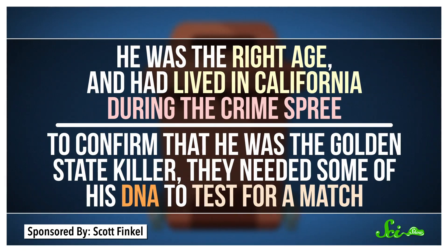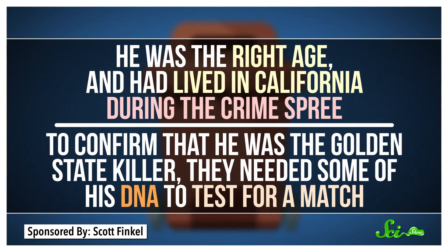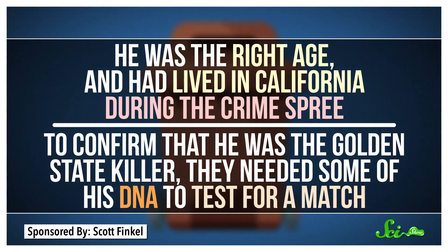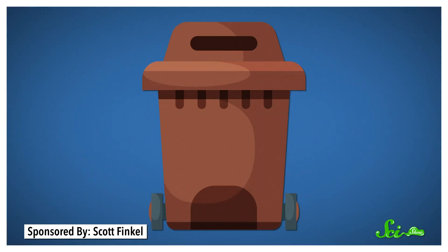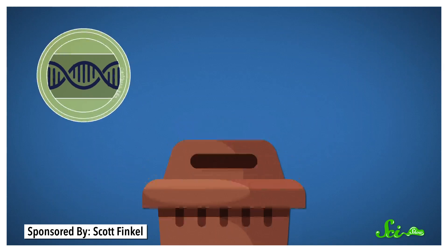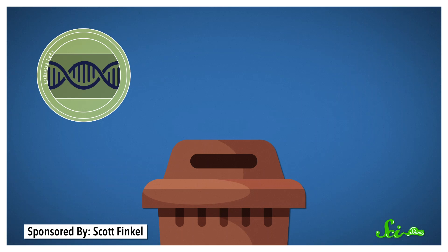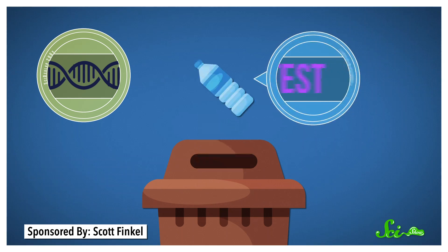He was the right age and had lived in California during the crime spree. To confirm that he was the Golden State Killer, they needed some of his DNA to test for a match. So they put him under surveillance and grabbed his trash. They used something with some of his cells on it — maybe a straw, soda can, or used Kleenex; we don't know what exactly. And then they did a DNA test — probably STR analysis — and got a match. Just to be sure, they checked again: another garbage item, another test, and another match.